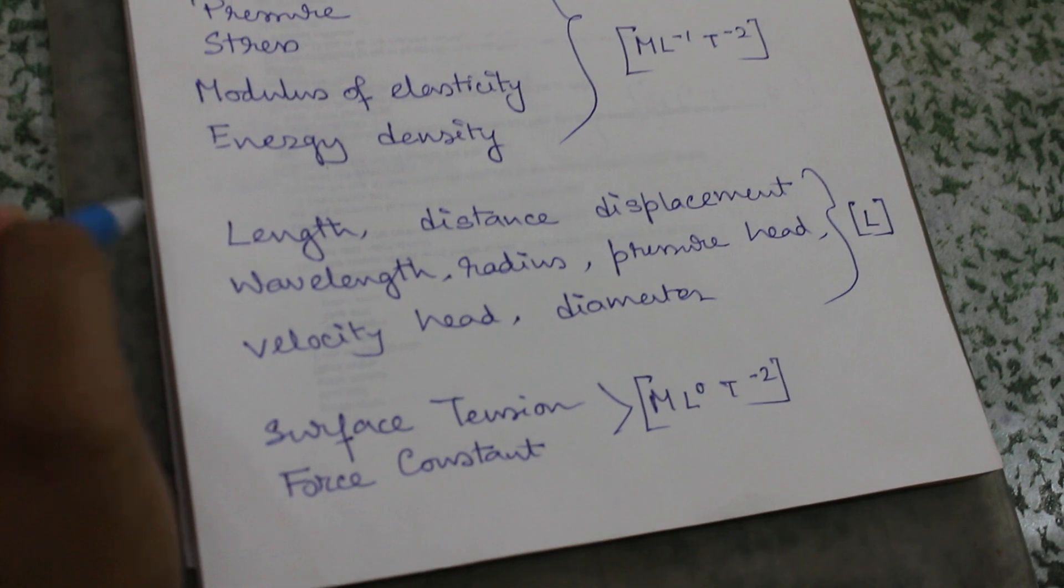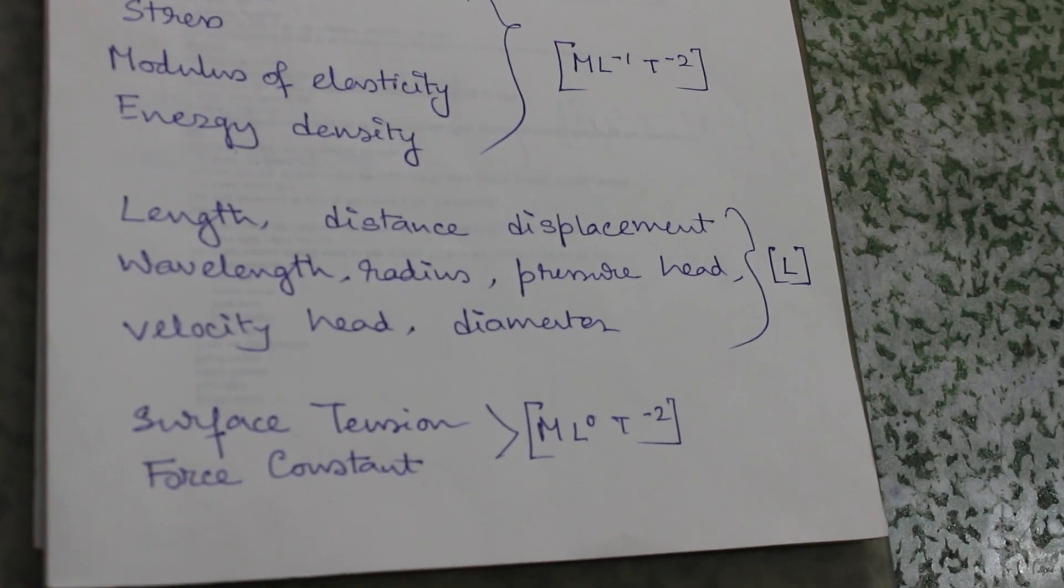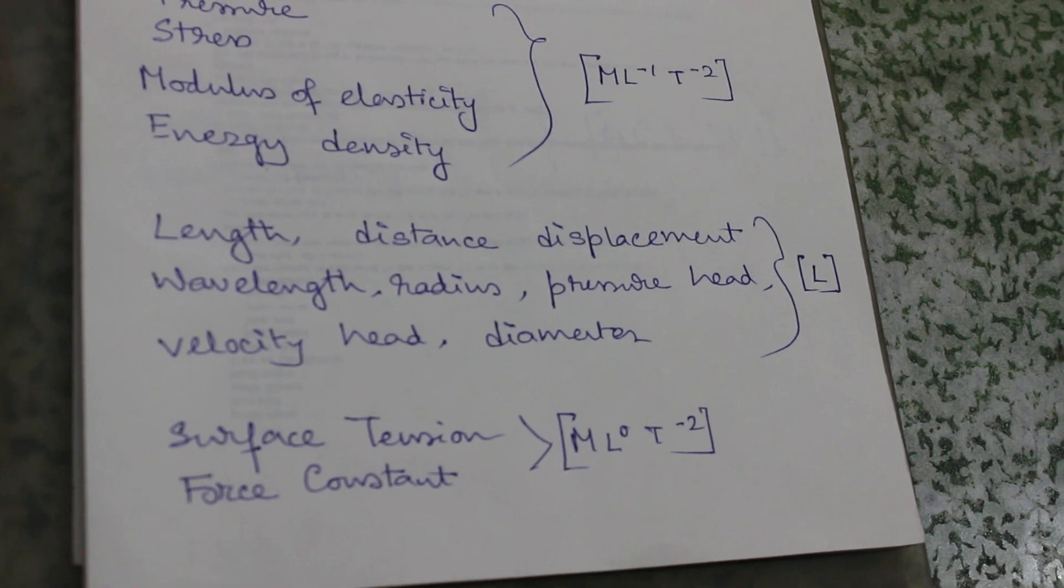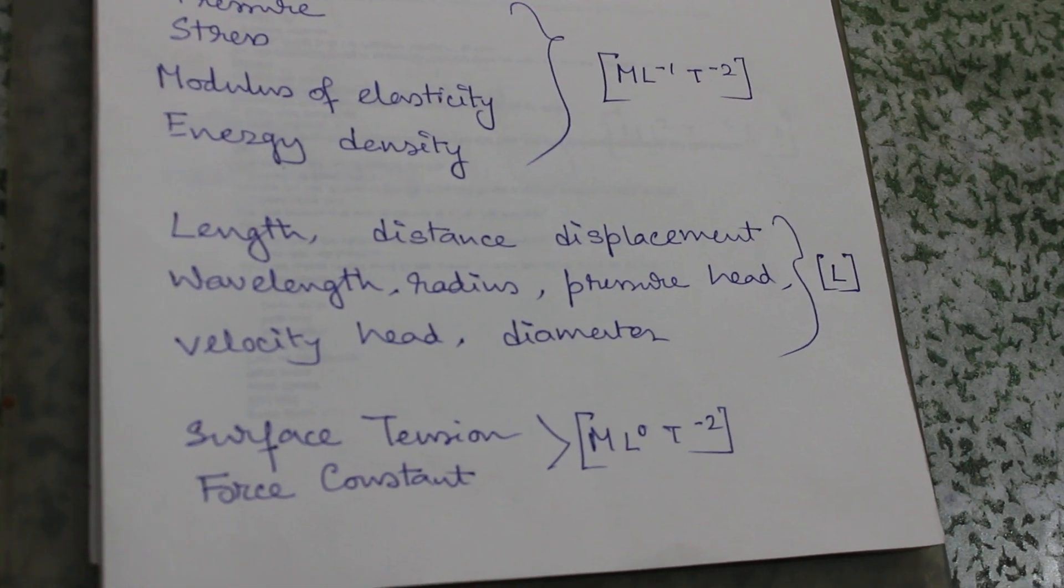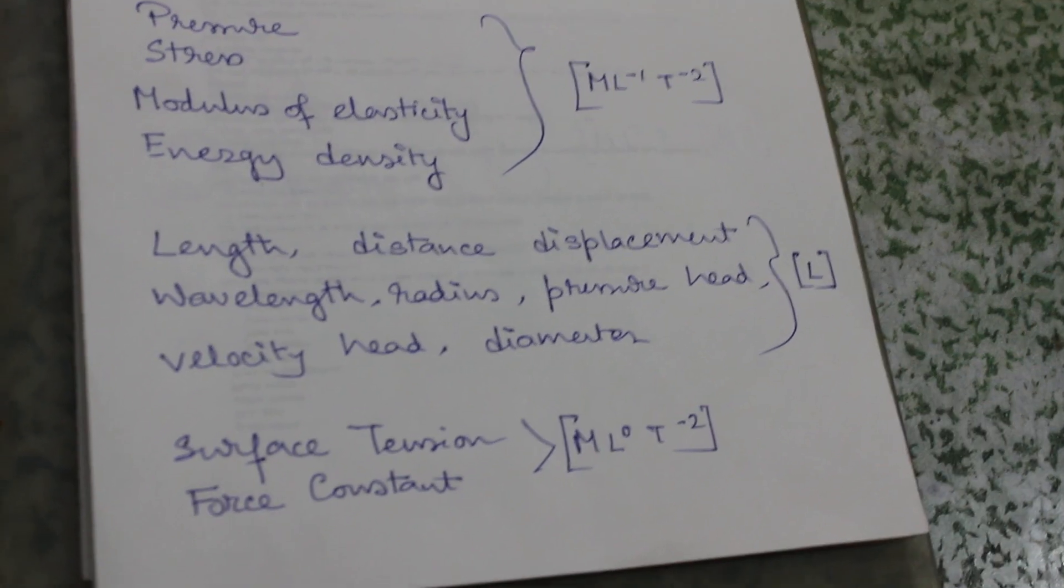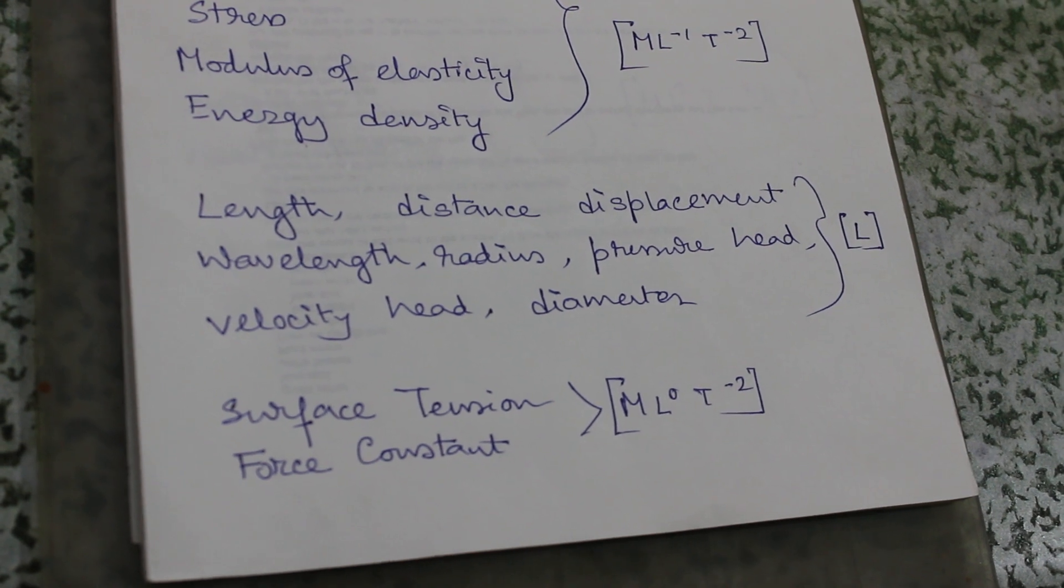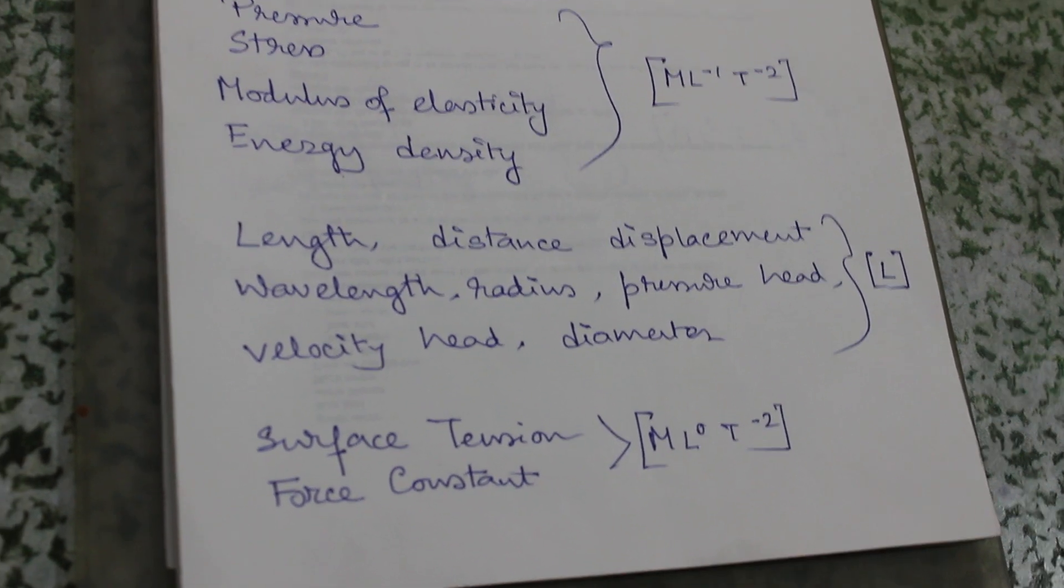Next there is length, distance, displacement, wavelength, radius, pressure head which is in Bernoulli's theorem, velocity head, diameter - all have the same dimension. Their unit is meter or centimeter.